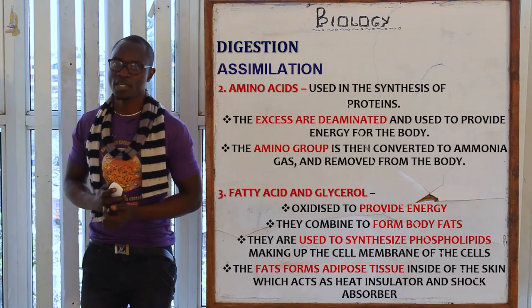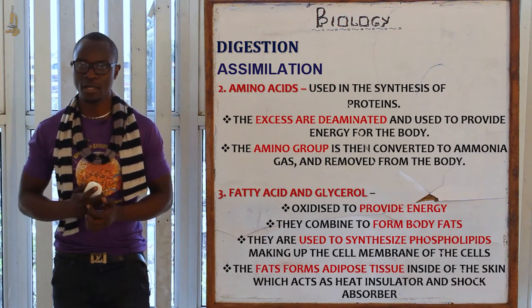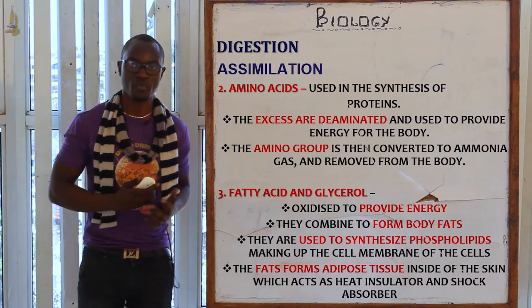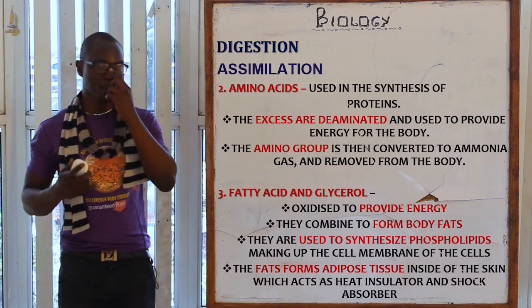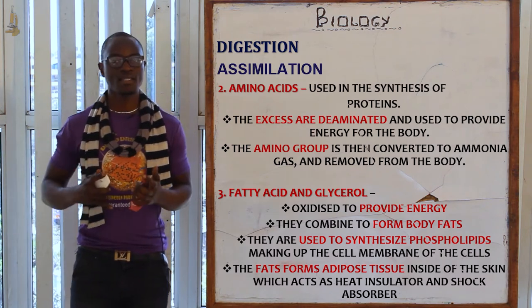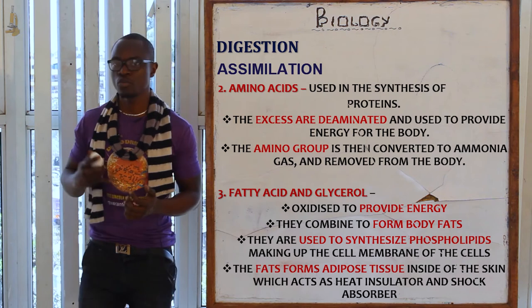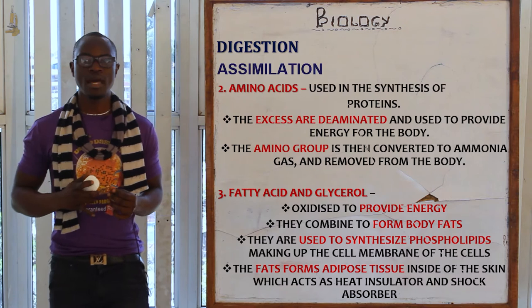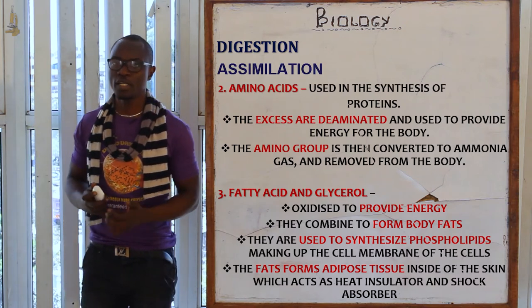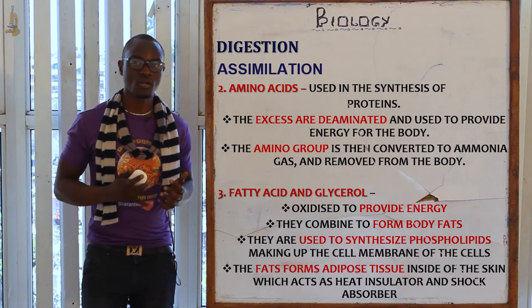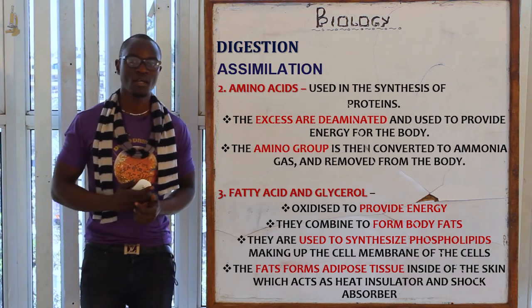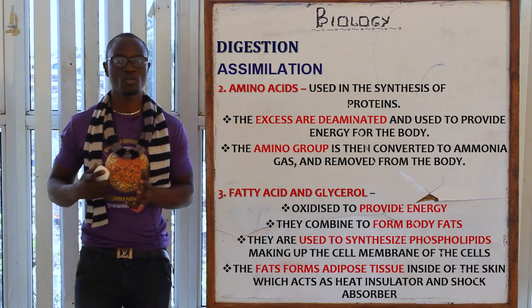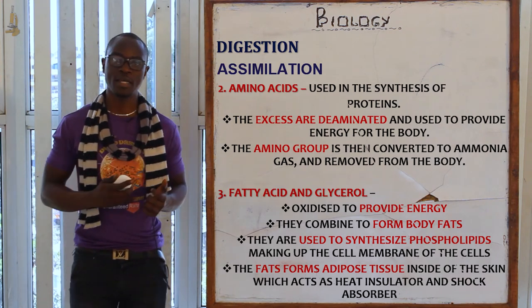Amino acids are another product assimilated in the body, used in the synthesis of proteins, as amino acids are the building blocks of proteins. Excess amino acids are deaminated in the liver and used to provide energy. The amino group is converted to ammonia gas, which contributes to the foul smell of feces or urine — we will see more of this in the topic of excretion.